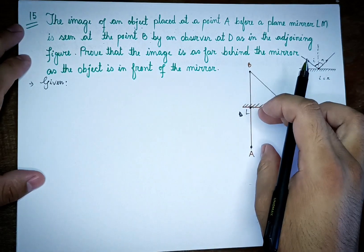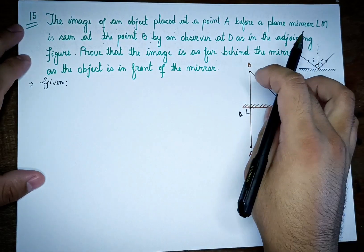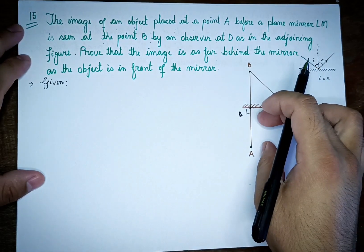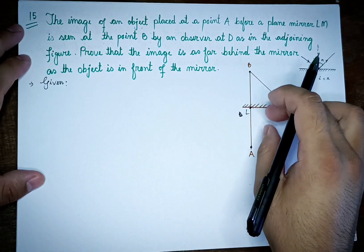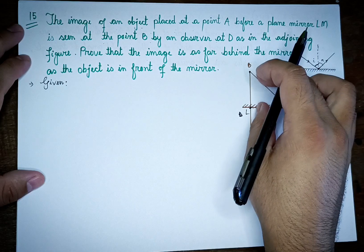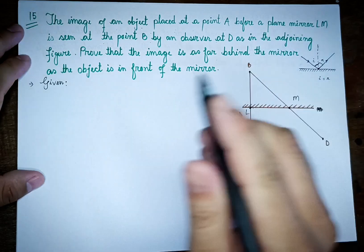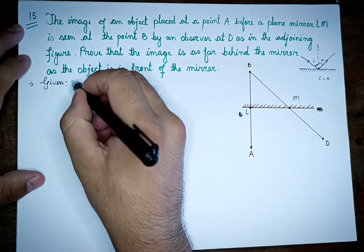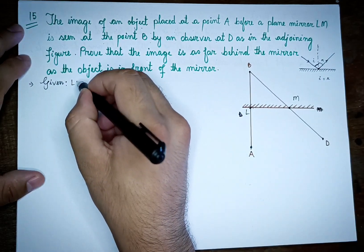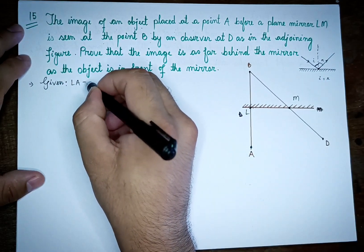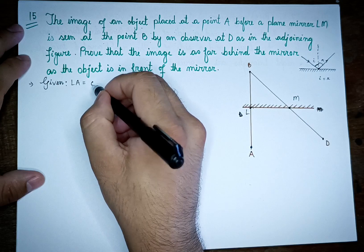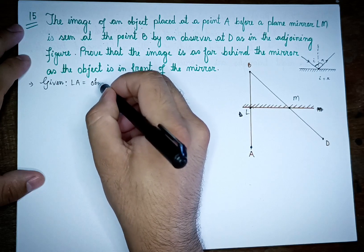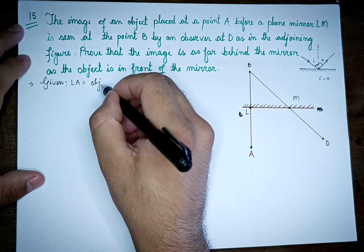LA is the object distance and LB is the image distance. We need to prove that the object distance equals the image distance.